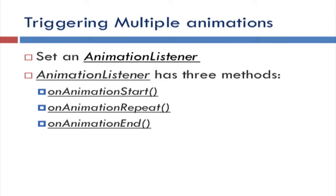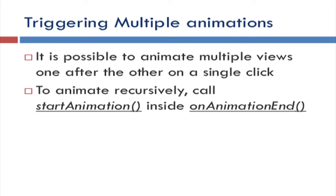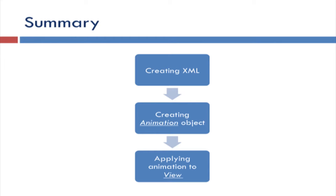To trigger multiple animations, on an Animation object you can set an AnimationListener, which provides three callbacks: onAnimationStart, onAnimationRepeat, and onAnimationEnd. These are called whenever the animation starts, repeats, or ends respectively. It is possible to trigger multiple chained animations on a single click by calling startAnimation() inside onAnimationEnd. To summarize view animation: first create an XML with the animation information, then load it into an Animation object, then call startAnimation() on your view passing the animation object. That is how view animation is done.